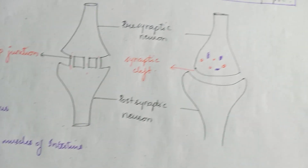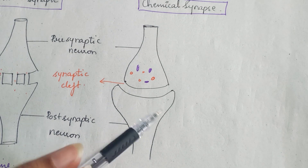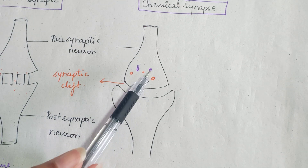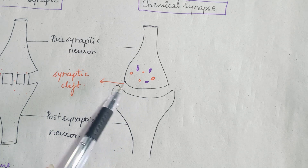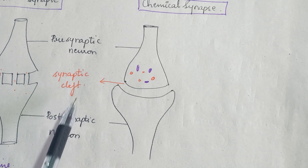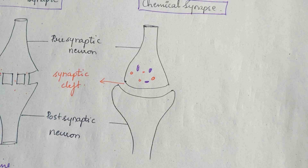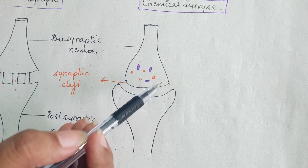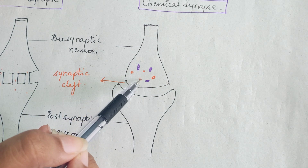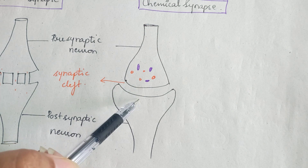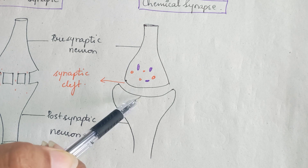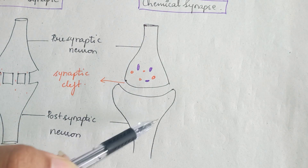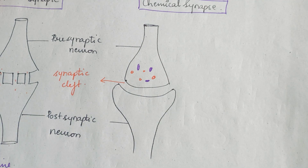Now we come to the chemical synapse. As you can see, the space between the presynaptic and the post-synaptic neuron is a cleft called the synaptic cleft. The action potential reaching the presynaptic terminal causes release of neurotransmitters stored in vesicles. When there is an action potential, the vesicles release the neurotransmitter, which attaches to receptor proteins and causes an action potential change in the next neuron.